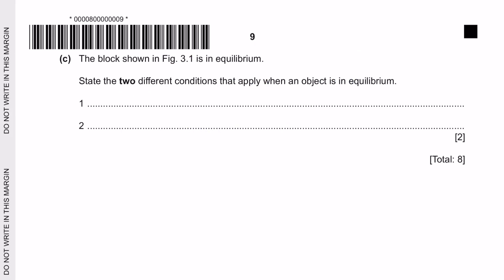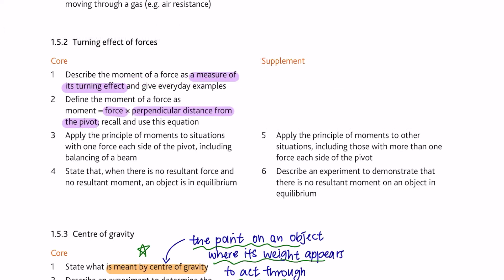Part C: the block is in equilibrium. State the two different conditions that apply when an object is in equilibrium. Referring to the syllabus, when an object is in equilibrium there is no resultant force and no resultant moment — those are the two conditions.